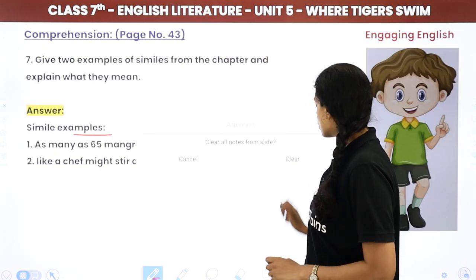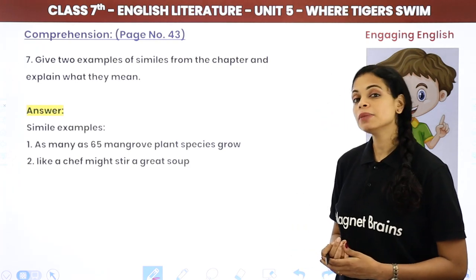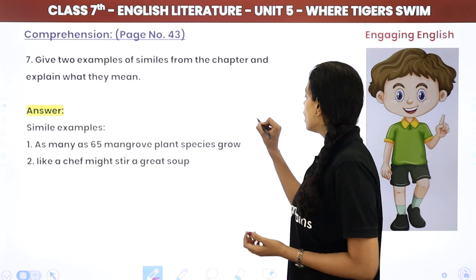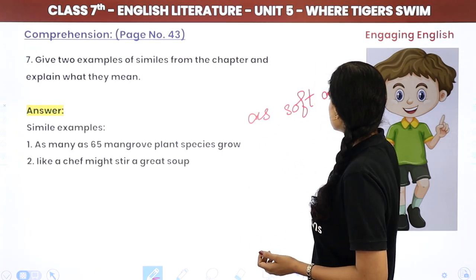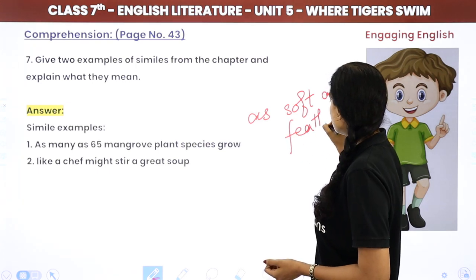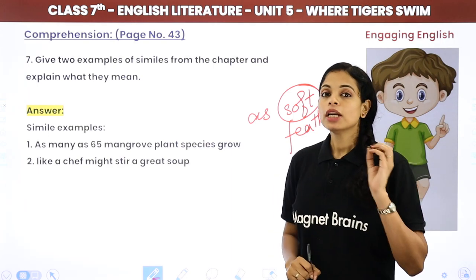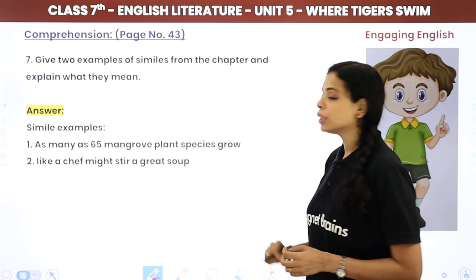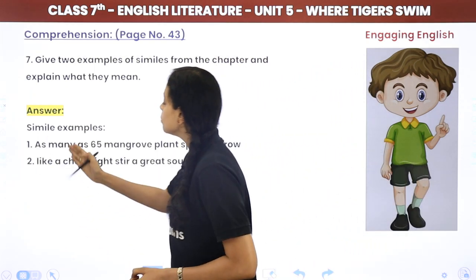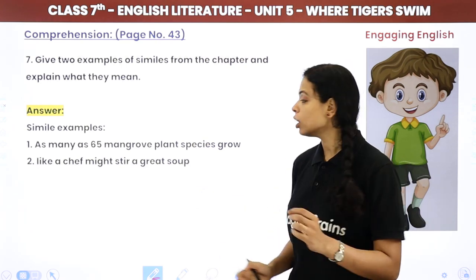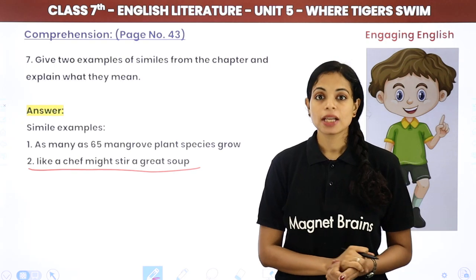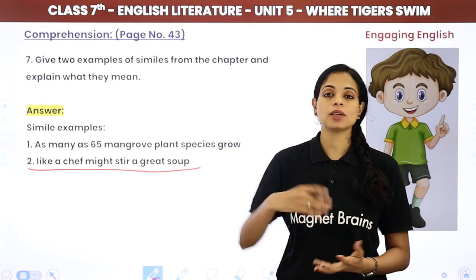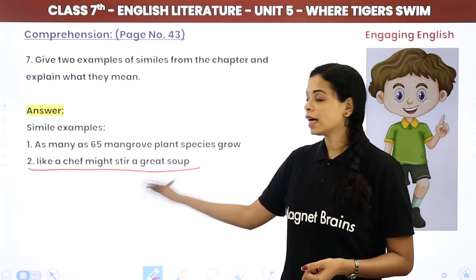Give two examples of similes from the chapter. Similes are comparisons between two different things using 'as' or 'like' — for example, 'her lips were as soft as a feather.' The two similes used in the chapter are: one, 'as many as 65 mangrove plant species grow'; and two, 'like a chef might stir a great soup', referring to how so many nutrients come together in the ecosystem, just as a chef mixes his great soup.